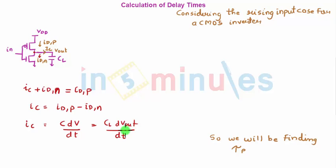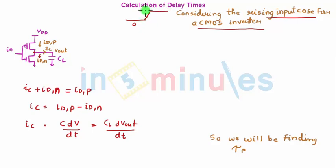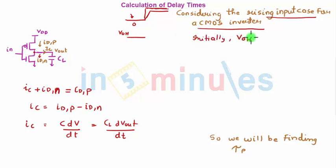Let's consider the rising input case for our CMOS inverter. Initially the input was 0 (VOL), then it began to rise toward VOH. When the input was 0, the output was high at VOH. So when the input voltage switches from VOL to VOH, this is the rising input scenario we are analyzing.